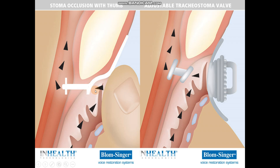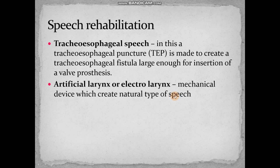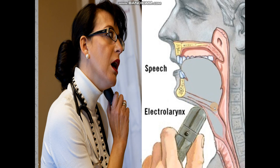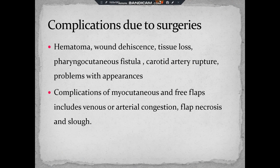With the TEP prosthesis, by closing this opening and when the patient tries to speak, air movement occurs in a waveform and can create some amount of voice. The patient can also use an adjustable valve instead of using the thumb to close the stoma. Alternatively, an artificial larynx or electrolarynx is available — the patient will have an electronic voice similar to a robot speaking. Complications include hematoma, wound dehiscence, tissue loss, fistulas, and rupture.